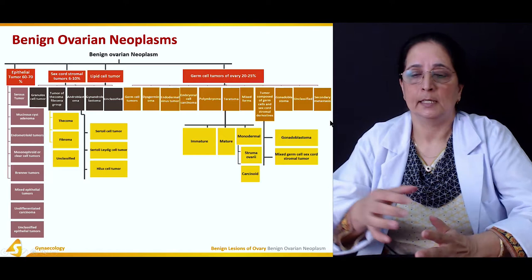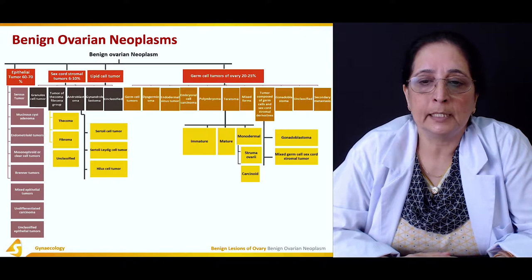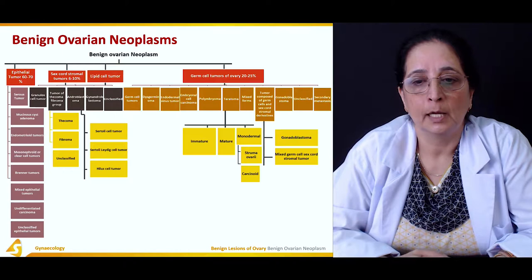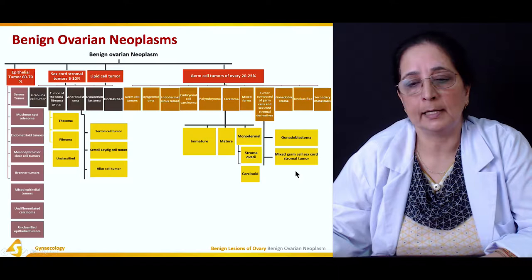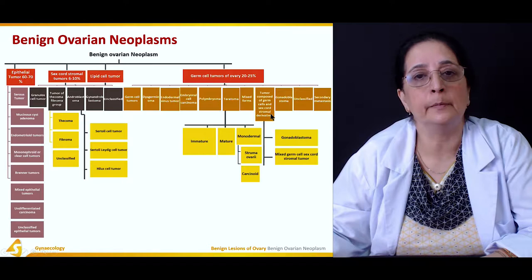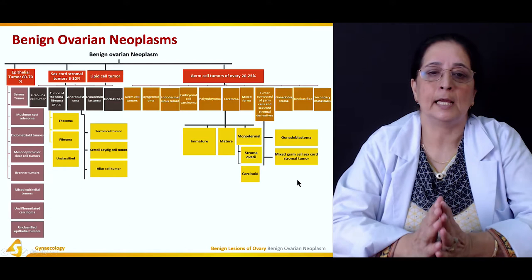Teratoma is of three types: immature teratoma, mature teratoma, and monodermal teratoma. In monodermal teratoma, subtypes include struma ovarii and carcinoid. Tumors composed of germ cells and sex cord derivatives include gonadoblastoma and mixed germ cell-sex cord stromal tumor. These cover all the different types of ovarian neoplasms.